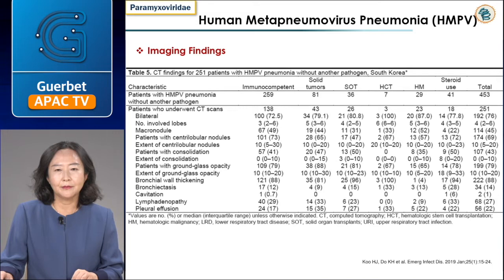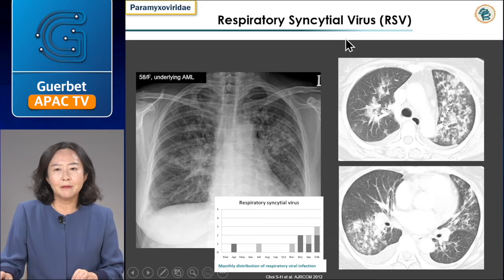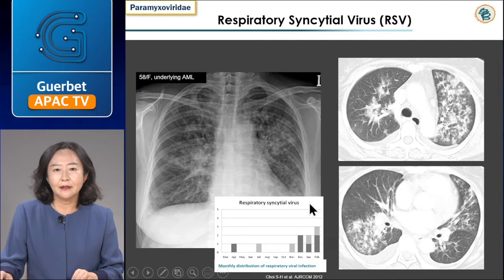We analyzed CT findings for 251 patients with HMPV pneumonia. The most common CT findings are bilateral centrilobular nodules with ground-glass opacity. Cavitation and pleural effusion are less common. Respiratory syncytial virus is in the same viral family as parainfluenza virus and HMPV, and imaging findings are similar — multiple peribronchial nodules and ill-defined centrilobular nodules — but its outbreak period is winter, somewhat different from others.